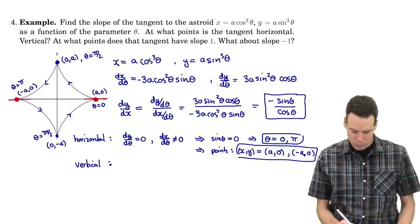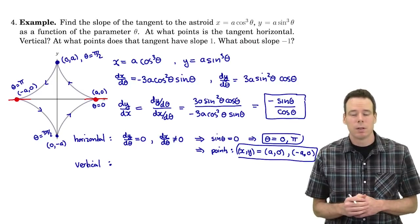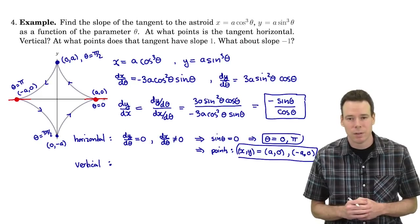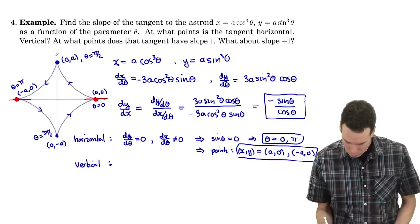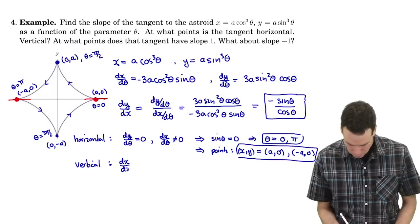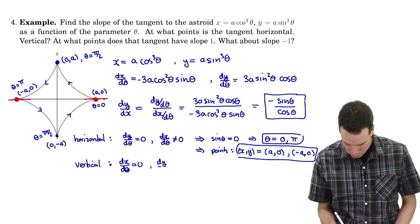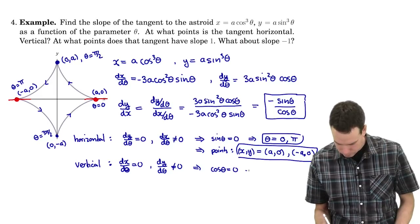Where is the tangent line vertical? The tangent is vertical where the derivative is infinite, or better: where the reciprocal of the derivative is 0 — equivalently, where dx/dθ equals 0 but dy/dθ is non-zero. So that's where cosine of theta is 0, which means theta equals π/2 or 3π/2.